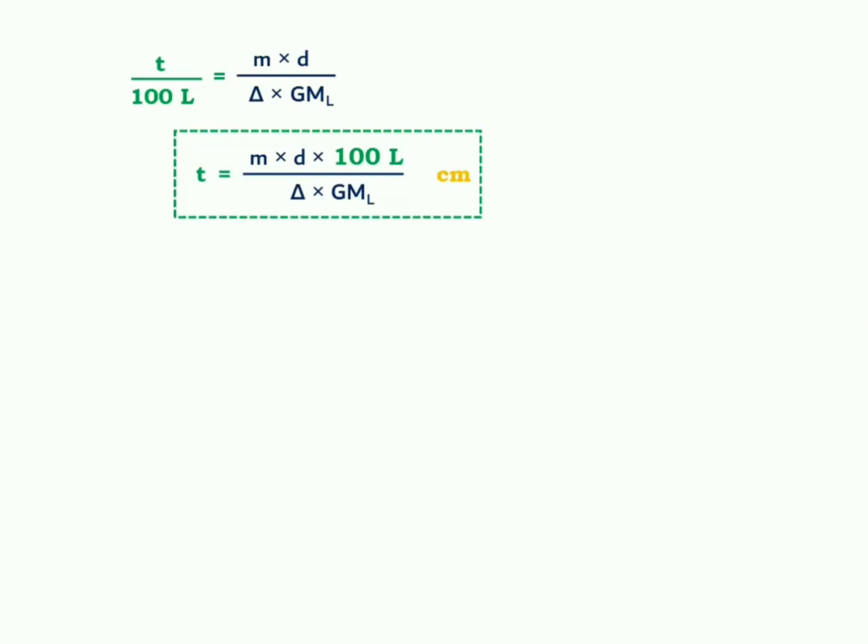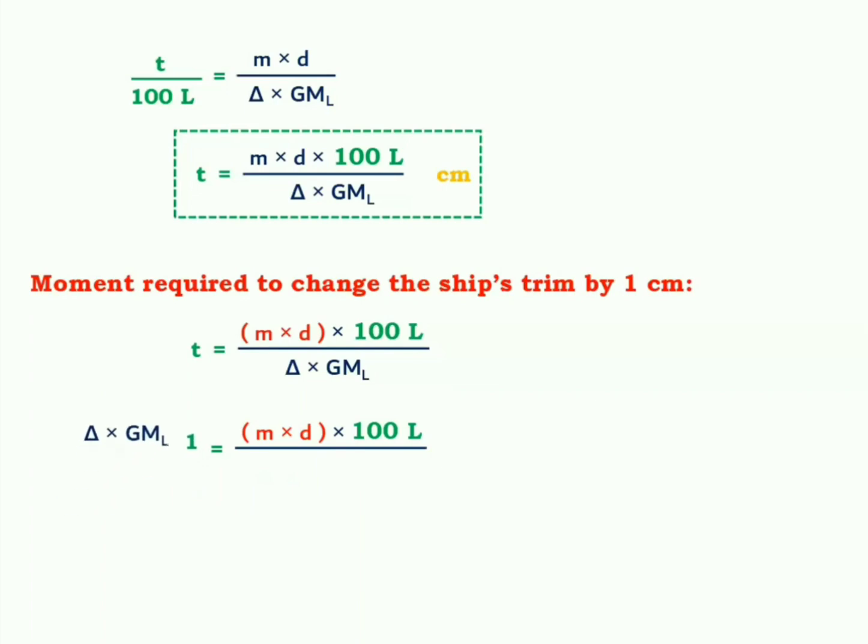Now, we are proceeding on to a new term called as MCT by 1 centimeter. Moment required to change the ship's trim by 1 centimeter. See, it is after all the moment caused by the shifting of mass which is causing the ship to have a change of trim. m into d is being that moment here. We are interested in the determination of this moment which will cause a change in trim equals to 1 centimeter. Let us substitute t equals 1 centimeter and simplify this expression for the determination of m into d.